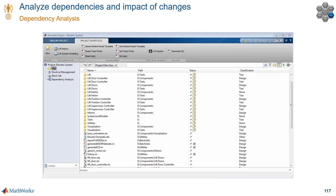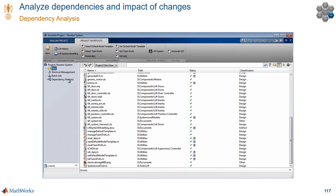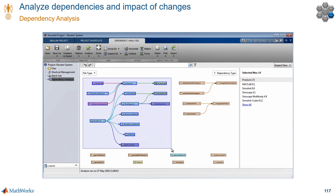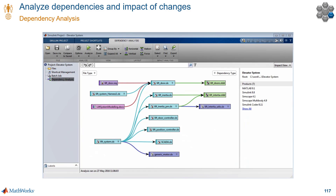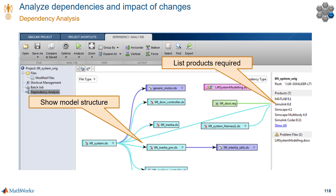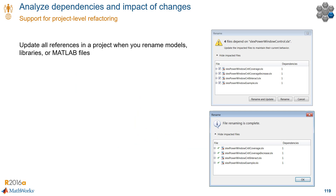Perhaps one of the most helpful capabilities in projects is the ability to visualize and understand all the dependencies between files and the impact of changes that you make — especially if you're working with hundreds of files. So if you have a large project like this one, you can do a dependency analysis. When that is done, what you see is the relationship and dependencies for all the files in your project. It gives you an idea of the model structure, shows you a list of required products, and also reports issues with missing files. When you make changes to a file, like renaming it, the tool shows you all the other files that depend on that one file, and it helps you update them with just one click so you can make the changes and move on.